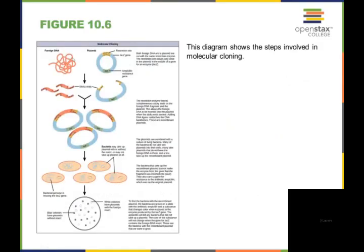This is what's done in molecular cloning. You have your piece of foreign DNA here, and a lot of times this is done with a plasmid, which is a mobile genetic element that are used a lot in bacteria. So you're going to cut both the foreign DNA and the plasmid with the same restriction enzyme.